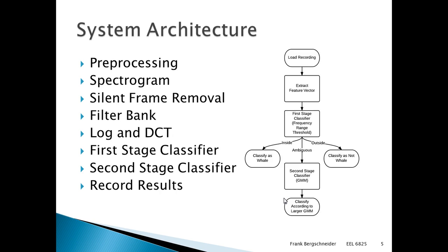To give an overview of the system architecture, this is the general scheme that's used. An audio recording is loaded, then pre-processed. The spectrogram is computed, the silent frames are removed, and the modified spectrogram is then run through a filter bank. The log of the filter bank component outputs is taken and the discrete cosine transform is applied.